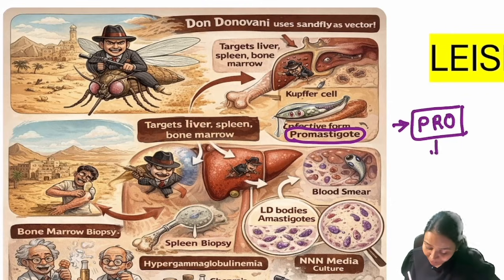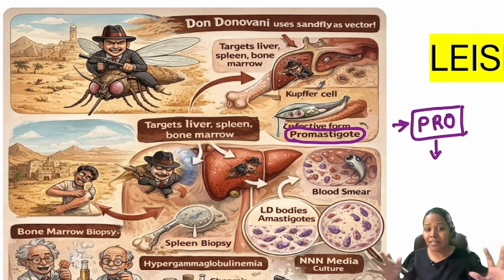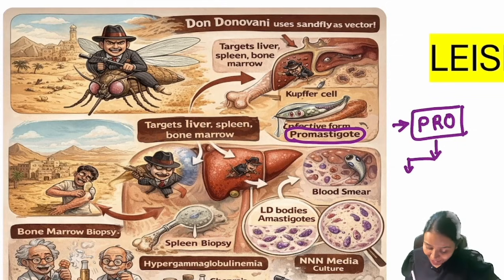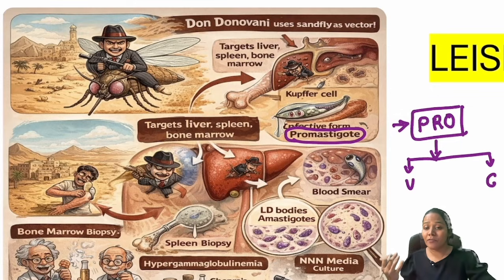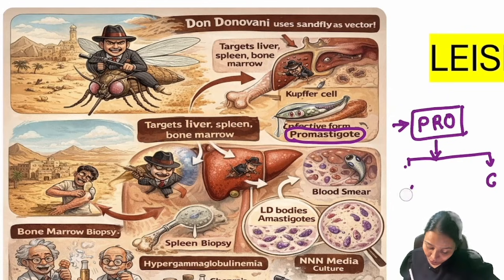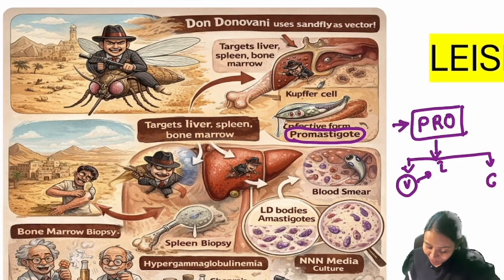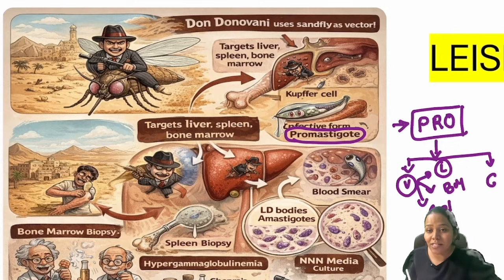Once inside, there are two possibilities: either he can go viscerally and enter big organs, or he can cause small cutaneous problems. Because he's a don, he prefers doing visceral problems in big organs. The visceral organs affected are the liver, bone marrow, and spleen.